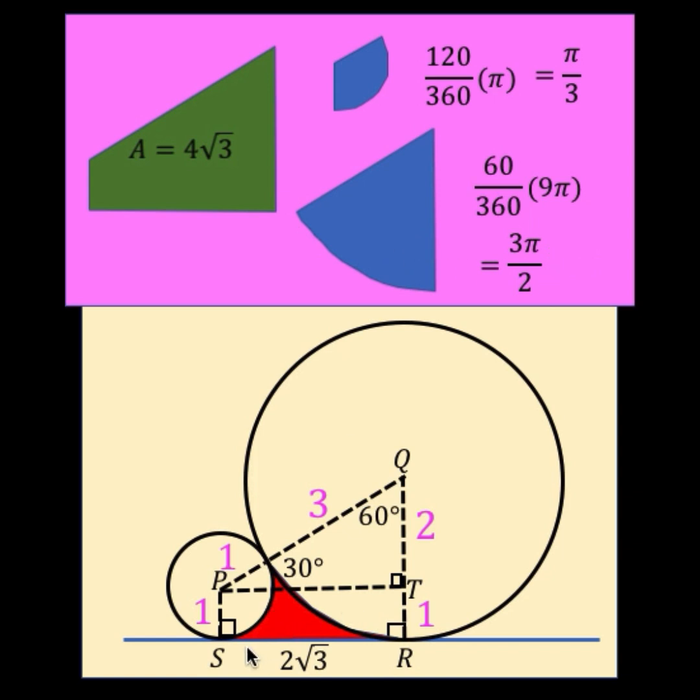So for the area of this red shaded region, we just have to subtract from 4 square root of 3, the values pi over 3 and 3 pi over 2. We can simplify this as 4 square root of 3 minus the sum of these two.